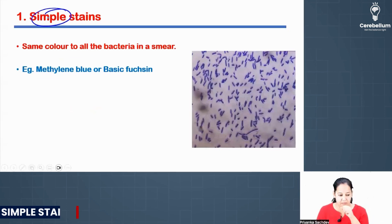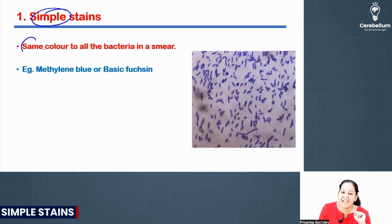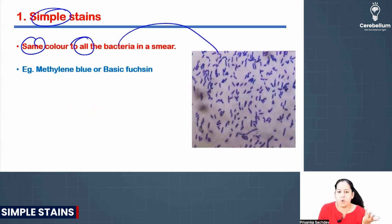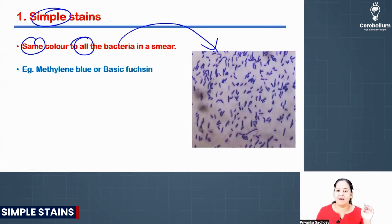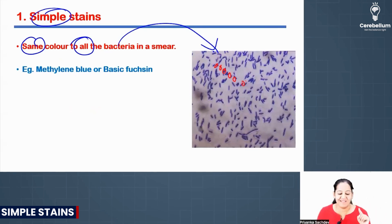Simple stain is known as simple because it gives the same color to all bacteria. It doesn't differentiate bacteria — same color to all. See, all the bacteria are blue here. That is the meaning of simple stain.